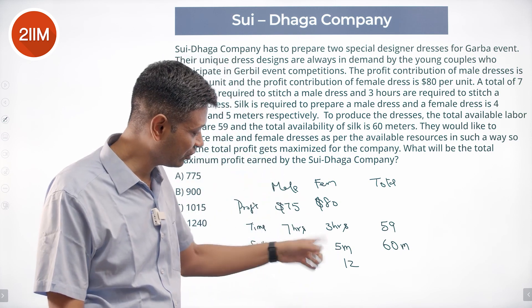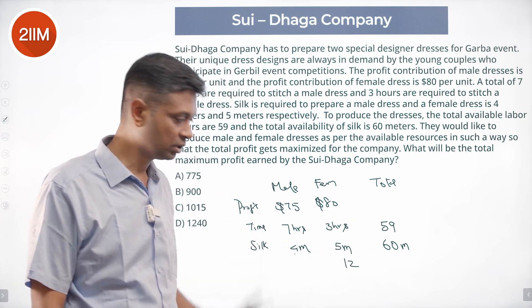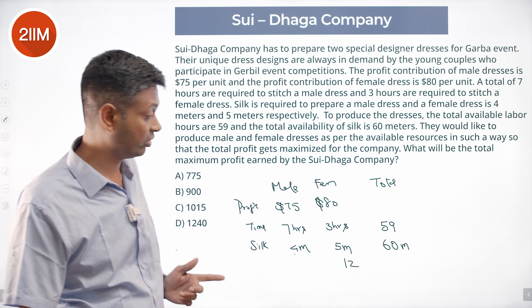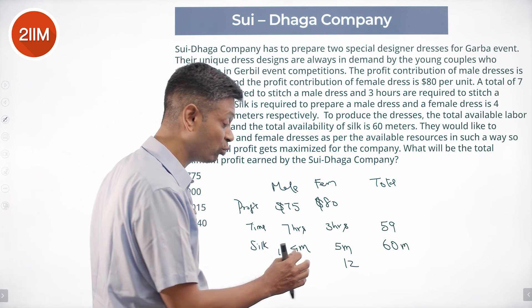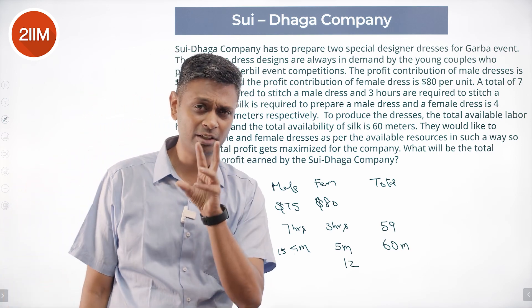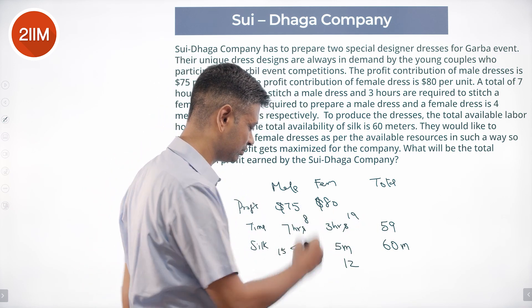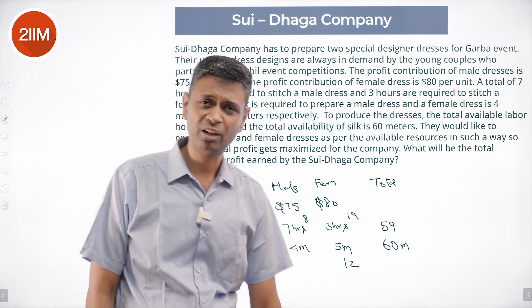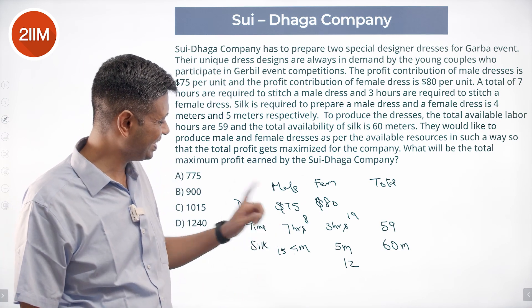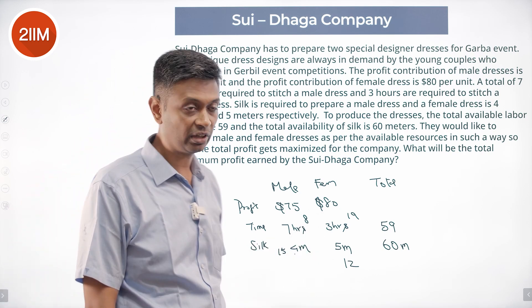The silk constraint: 60 divided by 5 is 12 female dresses maximum, and 60 divided by 4 is 15 male dresses maximum. If I take all silk for male dresses, I can produce 15, but I wouldn't have enough hours for 15 male dresses. So the limiting numbers are: 19 (hours/female), 8 (hours/male, since 59÷7 ≈ 8), 15 (silk/male), and 12 (silk/female).